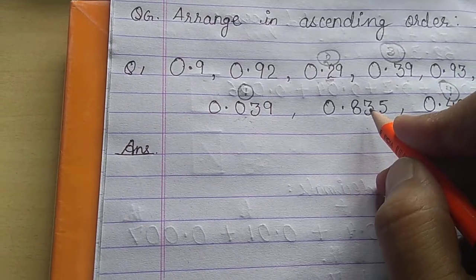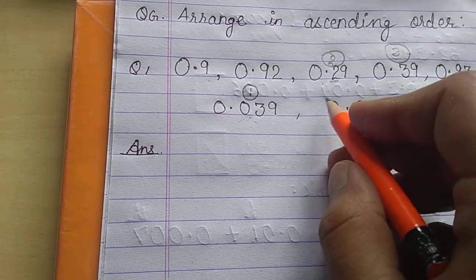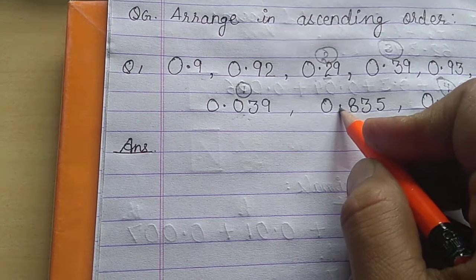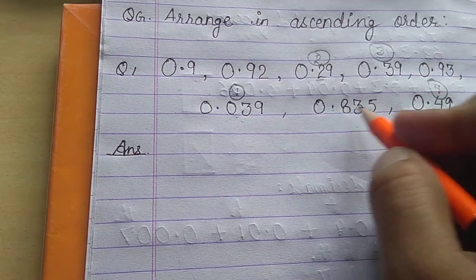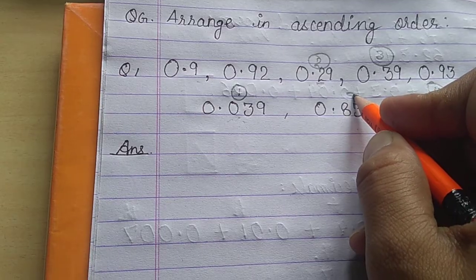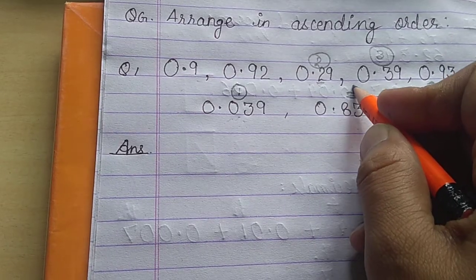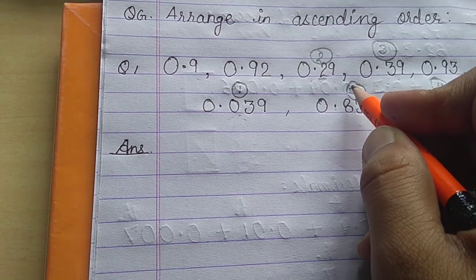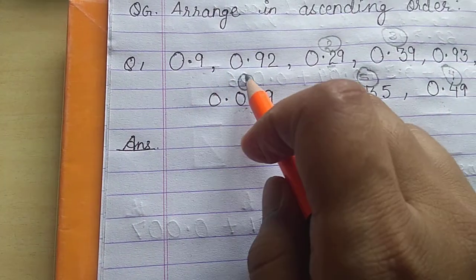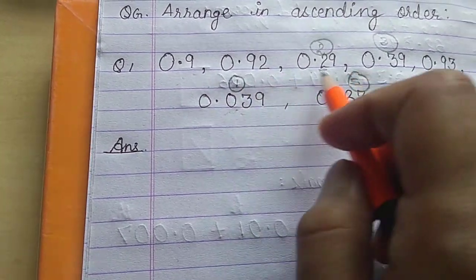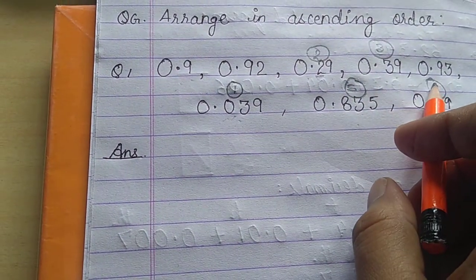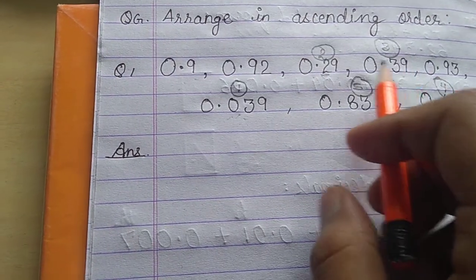Now at fifth place, see after 0.4, we have 0.8 here. So after fourth place, this will be at the fifth place. Now at sixth place, we have 0.9, 0.9, 0.9. Again, the first digit after the decimal is similar.